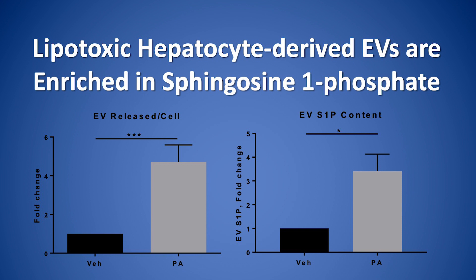And we can block this with a pharmacological inhibitor, a small molecule, to show that we can improve NASH. Our hope is to be able to identify the patients that may benefit from inhibitors of the S1P or sphingosine 1-phosphate signaling pathway that our lab has identified.